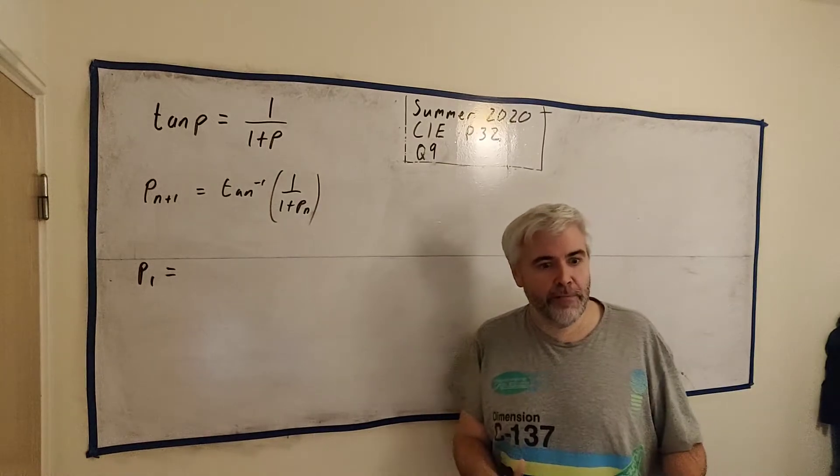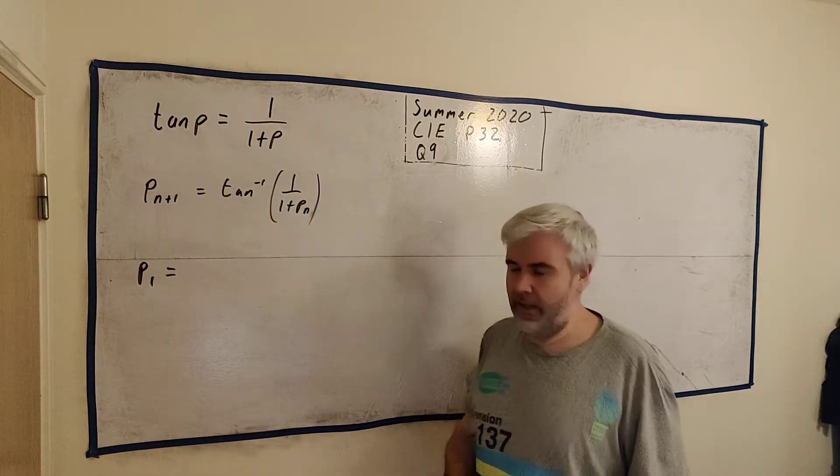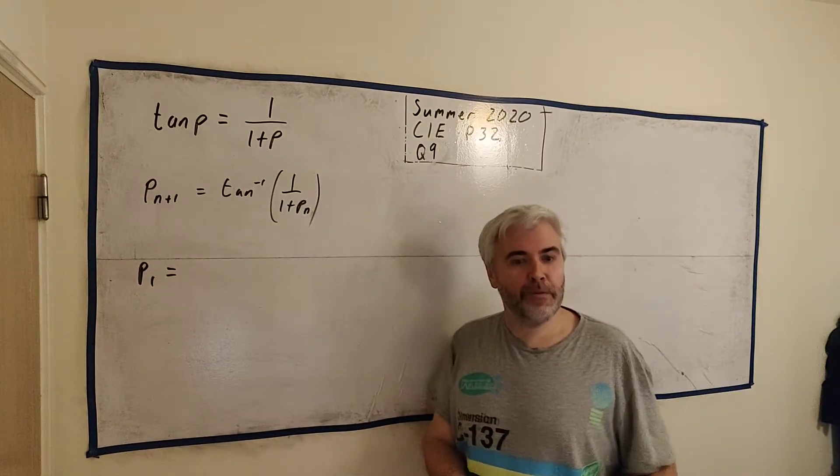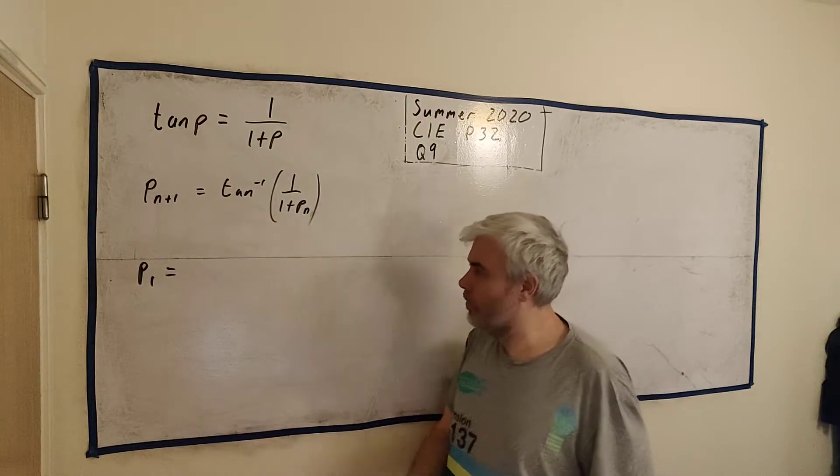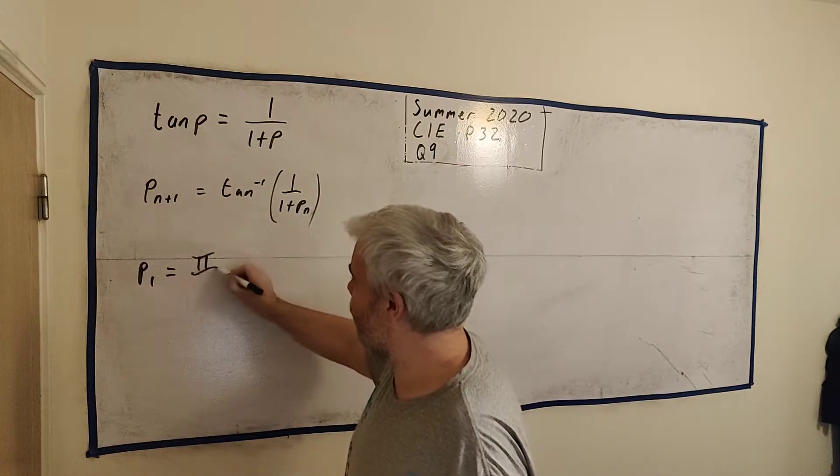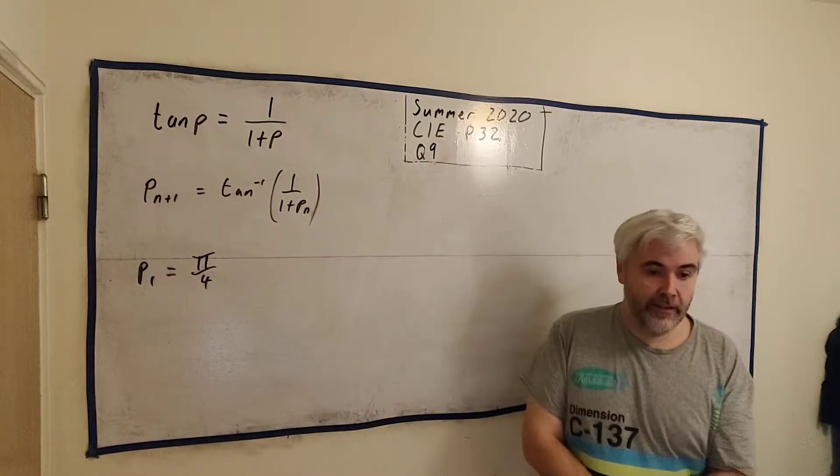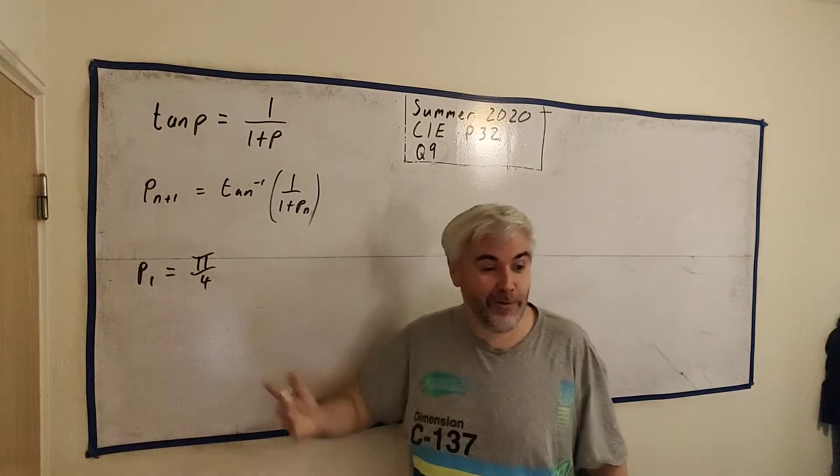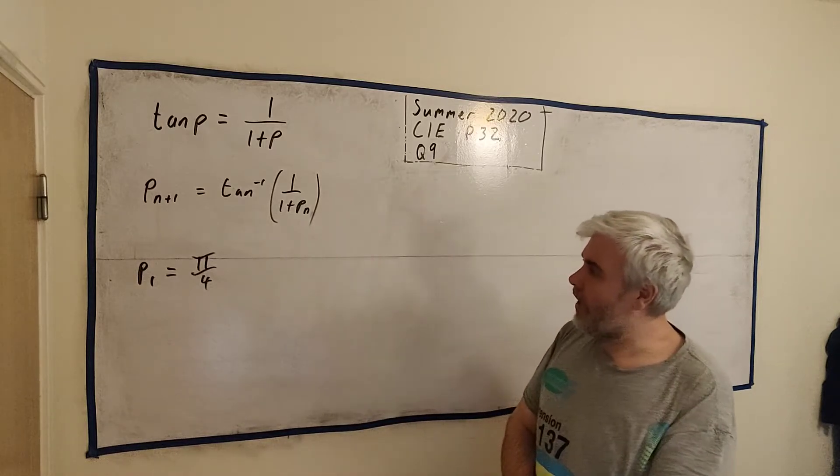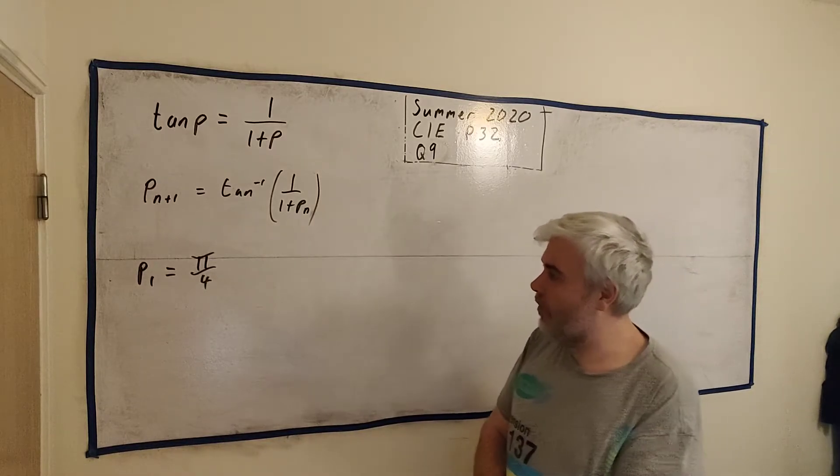I need to guess what P1 is equal to. We're trying to find P. So you can look at the picture and say, well, it's about halfway between 0 and pi over 2. So let's guess pi over 4. Really, it doesn't matter what you guess. You will get there. But you might as well guess close to it. So P1 is equal pi over 4.